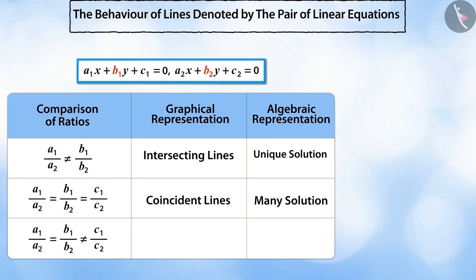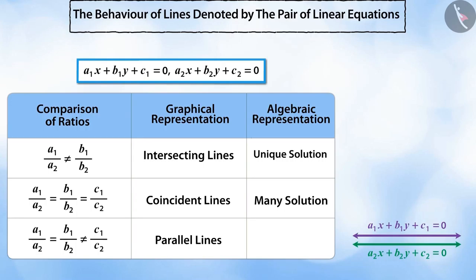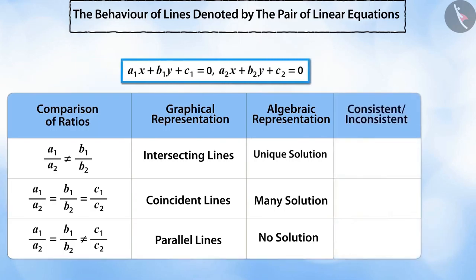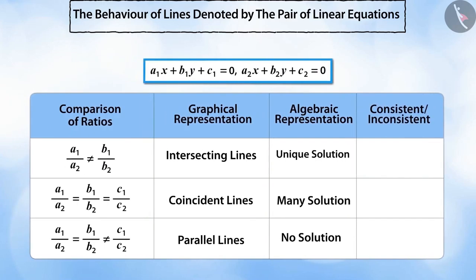And if the ratio of the coefficients of x and the ratio of the coefficients of y are not equal to the ratio of the constant terms, then the lines are parallel lines. In this case, there is no solution for the pair of equations. So, we can say that a pair of linear equations that have a common solution is called the consistent pair of equations, and a pair of linear equations that has no solution is called the inconsistent pair of equations.